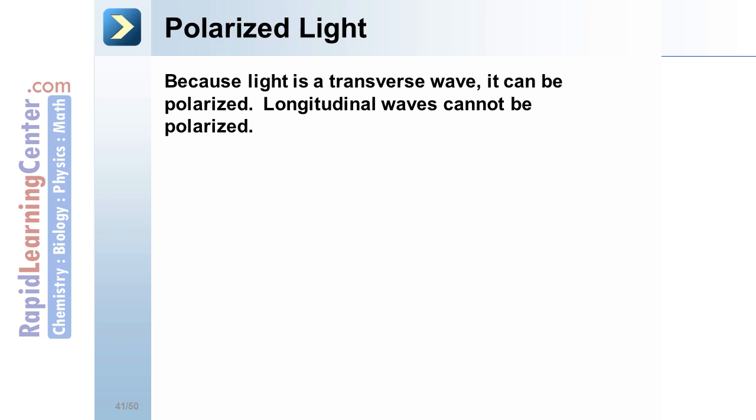Polarized light. Because light is a transverse wave, it can be polarized. Longitudinal waves can't. In polarized light, the electric field vibrates in only one direction.